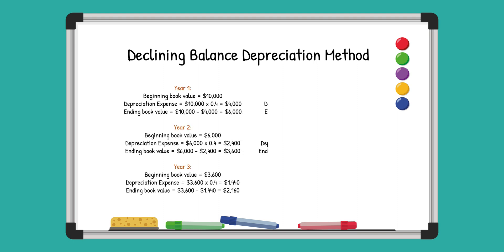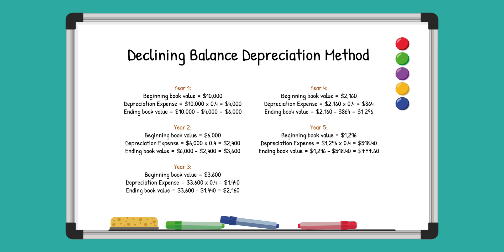Let's break this down with an example. Imagine a company buys a machine for $10,000 and is planning to use the declining balance method over five years with a salvage value of $1,000. The formula is straightforward: current book value times depreciation rate.